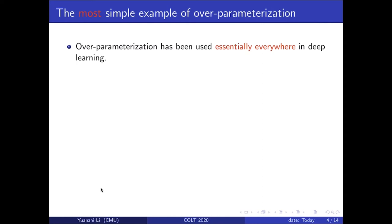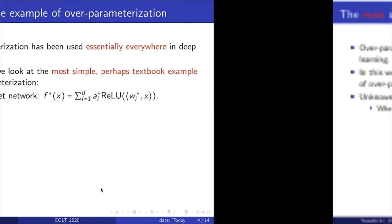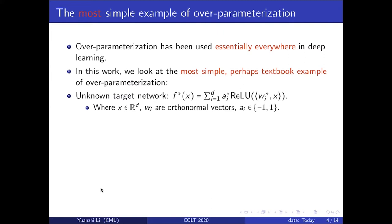Over-parameterization has been used essentially everywhere in deep learning. In this work, we look at the most simple, perhaps textbook example of over-parameterization. This example is super simple: given an unknown target network f-star, which is a two-layer neural network with ReLU activation functions, where x is from dimension d, the w_i's are normal vectors, and the a_i's are minus one or one.